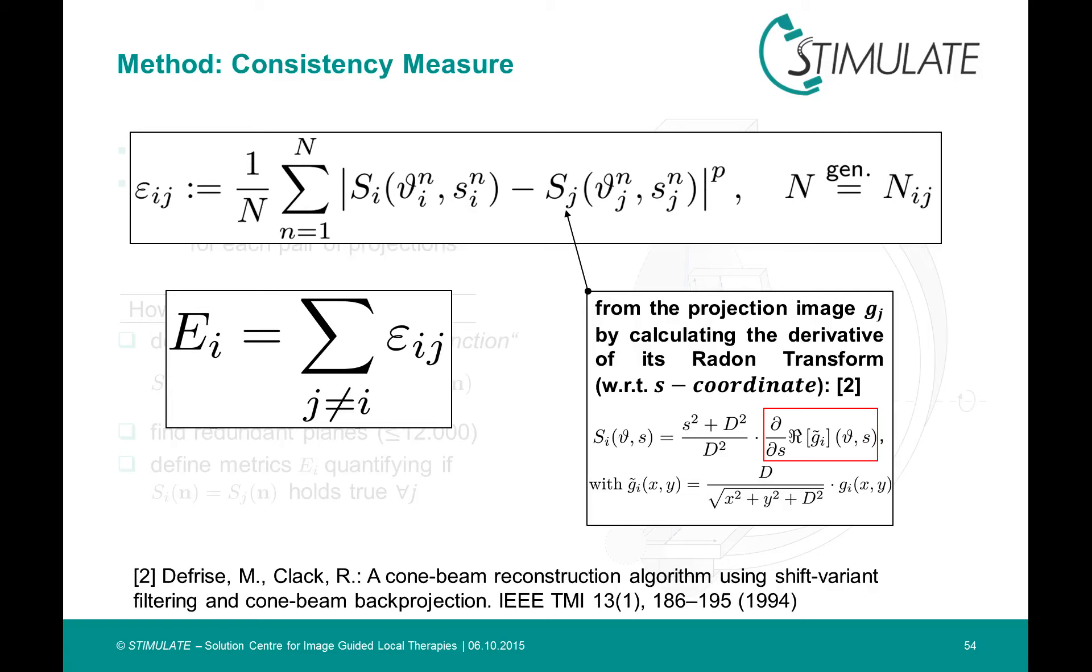Then we can summarize over all other projections, to quantify the consistency with respect to all other projections. This is denoted with the capital EI. I won't go into full detail here, but to give you an impression how to obtain the intermediate function in practice.